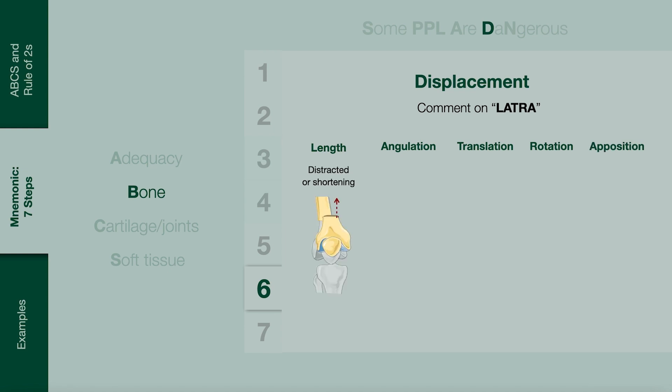Length. When commenting on length, comment on whether the fracture has caused shortening (decreased length) or distraction (increased length). This is an example of fracture shortening. Angulation. Comment on the angulation by describing the distal portion relative to the proximal portion of the fracture. This is an example of posterior tilt of the distal femur. Alternatively, this can be described as apex anterior angulation.